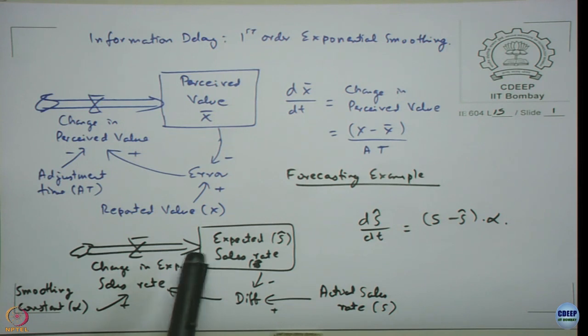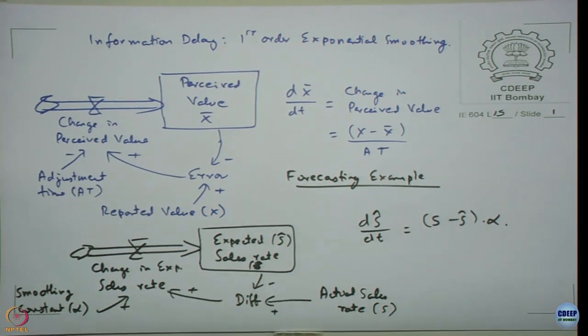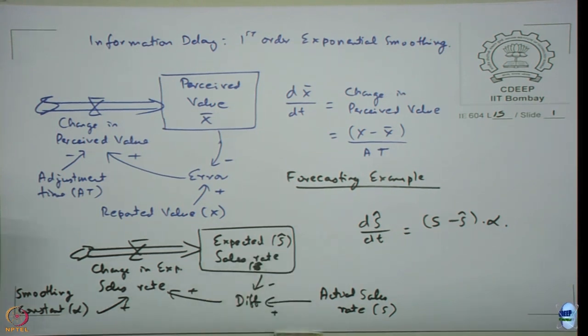So what this model is doing is—let us assume current sales rate and the expected sales rate is the same. So let us say 100 units. It has been selling consistently 100 units and I am forecasting also saying expected sales next week is also 100 units.